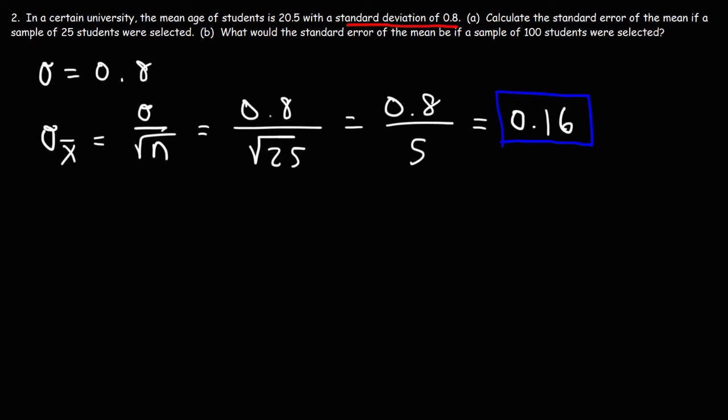Now for part B, it's going to be very similar. What would the standard error of the mean be if a sample of 100 students were selected? So let's use the same formula. So we're going to start with the population standard deviation of 0.8. And this time the sample size is 100.